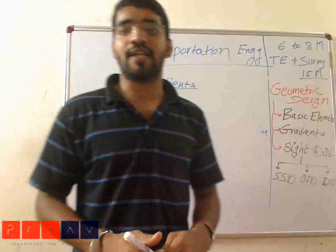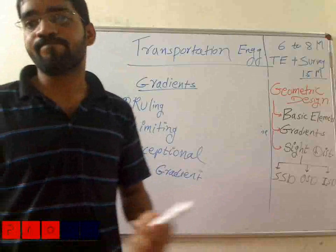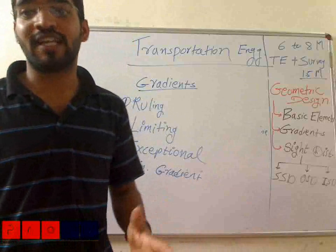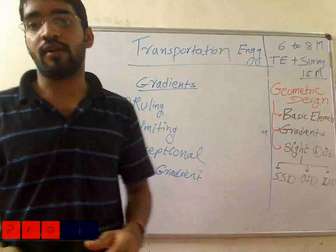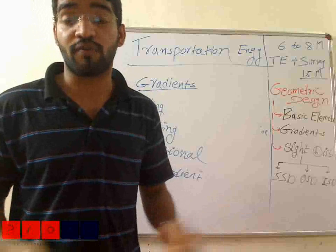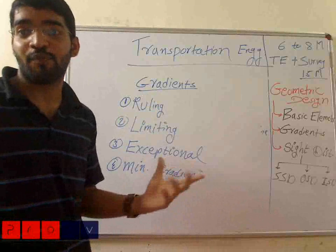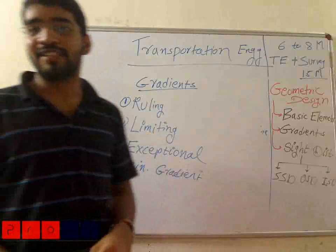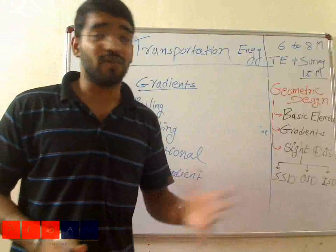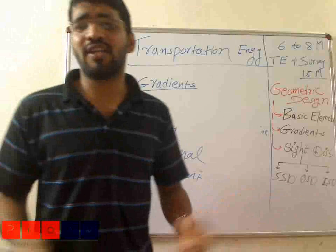Limiting gradient is a gradient which is steeper than the rolling gradient. It may be used in a restricted length of a road where keeping within the rolling gradient is not possible due to the topography of the road. An exceptional gradient is steeper than the limiting gradient and may be used in a short stretch only — maybe less than 60 meters in a 1 kilometer road length — generally used in an extraordinary situation.